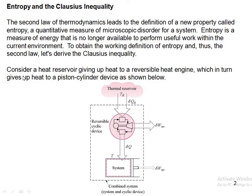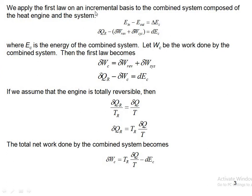To obtain the working definition of entropy and the second law, let us derive the Clausius inequality. Consider a heat reservoir giving up heat to a reversible heat engine, which in turn gives up heat to a piston-cylinder device. We have a thermal reservoir at temperature T_R giving δQ_R heat to the reversible cyclic device, which produces δW_reversible work and rejects δQ heat to a piston-cylinder device at temperature T. We take these two devices as a combined system receiving heat at T_R from the thermal reservoir and producing work.